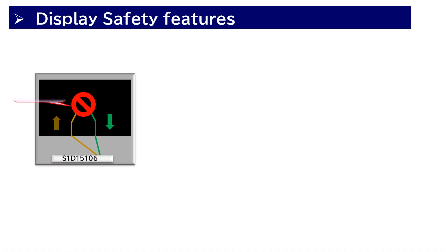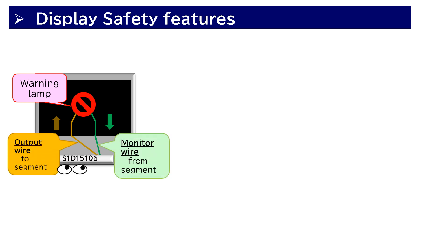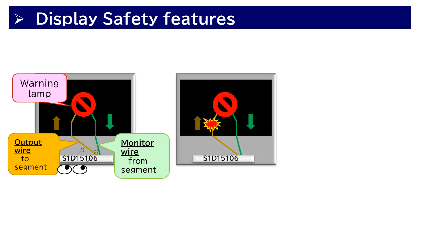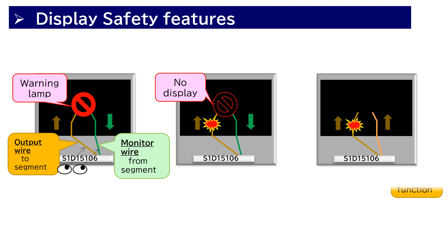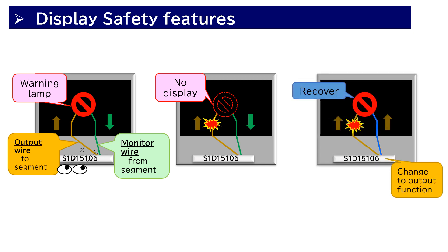S1D15106 also has display safety features. This IC compares voltage between the output wire and monitor wire. If a line from driver output to display is open and a display abnormality is detected, the display can be restored by switching the driver output terminal via control from the microcontroller. The safety functions of the driver circuit support the construction of high reliability display systems.